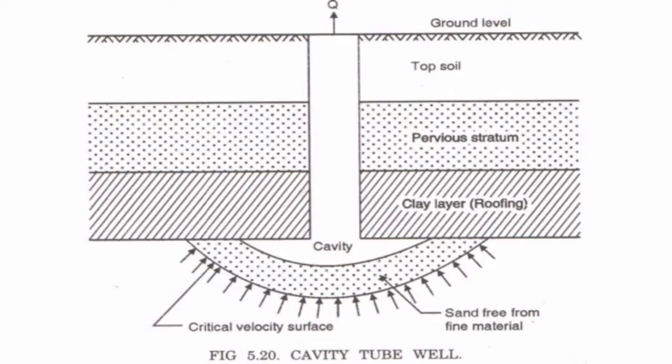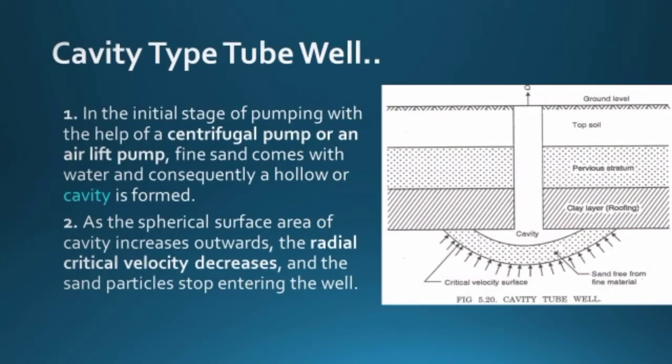In a cavity tube well, there is topsoil, then a pervious stratum or unconfined aquifer, then an impervious clay layer, and below that the confined aquifer from which water is drawn. As we pump out water, some soil is also pumped out and a cavity forms. In the initial stage of pumping with a centrifugal or airlift pump, fine sand comes with the water, producing muddy water. This happens because pumping is above critical velocity, causing many soil particles to be dislodged and flow with the water.